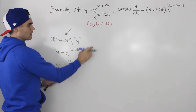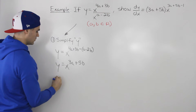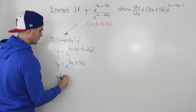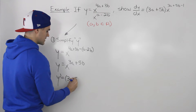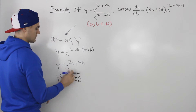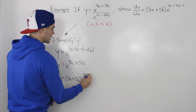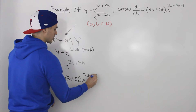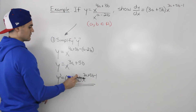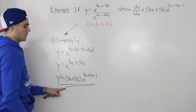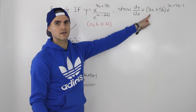Now we can just apply the power rule, since a and b are any real numbers. When we find the derivative, we bring the exponent down — so it'd be 3a plus 5b — and then we take 1 away from the exponent, giving us 3a plus 5b minus 1. That represents the derivative of this function.